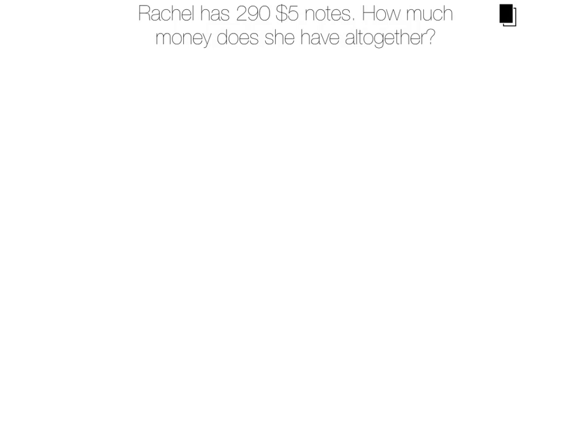Rachel has $295 notes. How much money does she have all together? Now we've talked about how the equation is 290 times 5. I don't know my 290 times tables. So what strategy can we use to solve this equation?